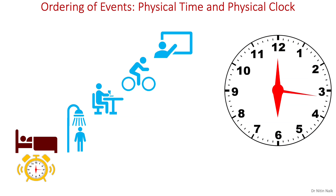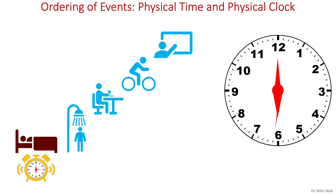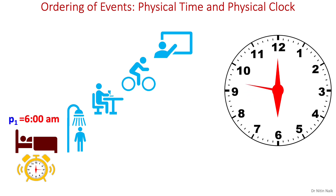Let's have a look at ordering of events in our real life based on physical time and clock. The notion of time helps us to arrange our daily activities in an order, and that is known as ordering of activities or events. Physical time is what most people think of as time. It is the duration an action or process takes to run, and a physical clock records this duration. Let's look at my morning schedule of 5 events to understand ordering of events. I wake up in the morning at 6 o'clock using my clock, so my day starts with time and clock.